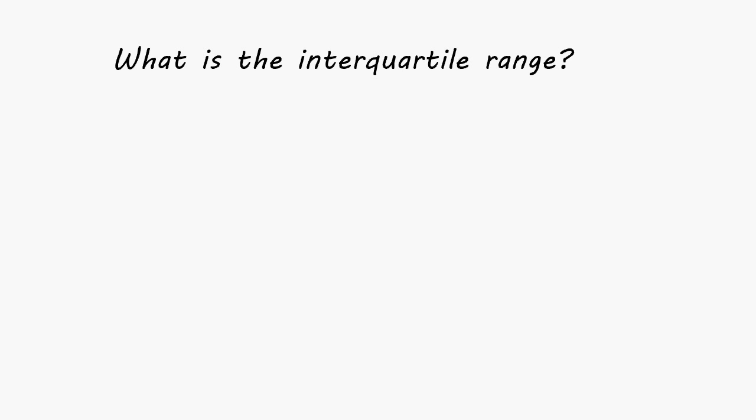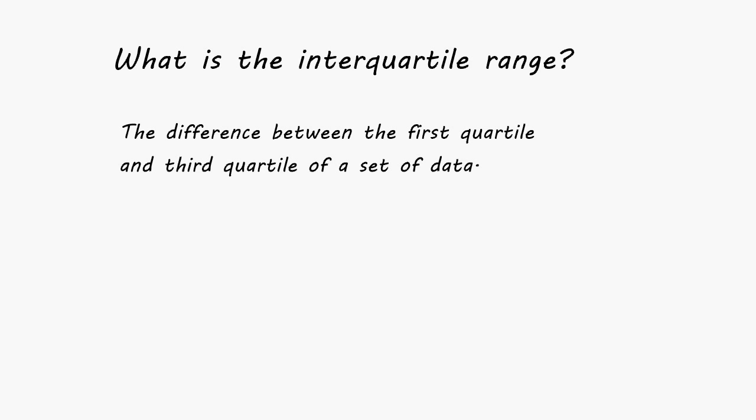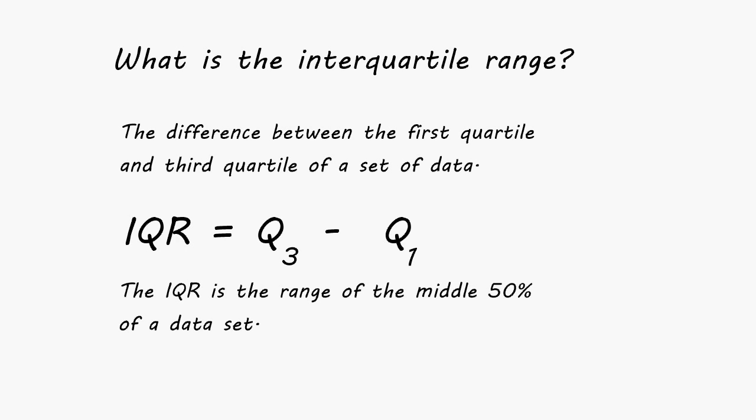In this tutorial, I am going to show you how to find the interquartile range of a data set. The interquartile range is commonly called the IQR. The interquartile range is the difference between the first quartile and the third quartile of a data set — specifically, the difference between Q3 and Q1. The IQR is commonly called the range of the middle 50% of a data set.